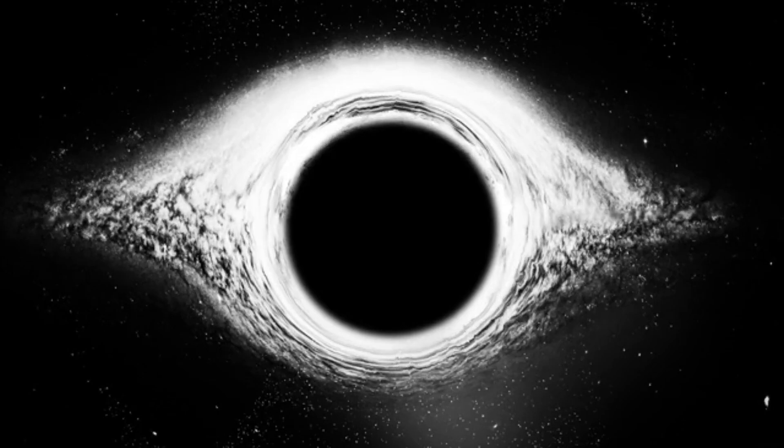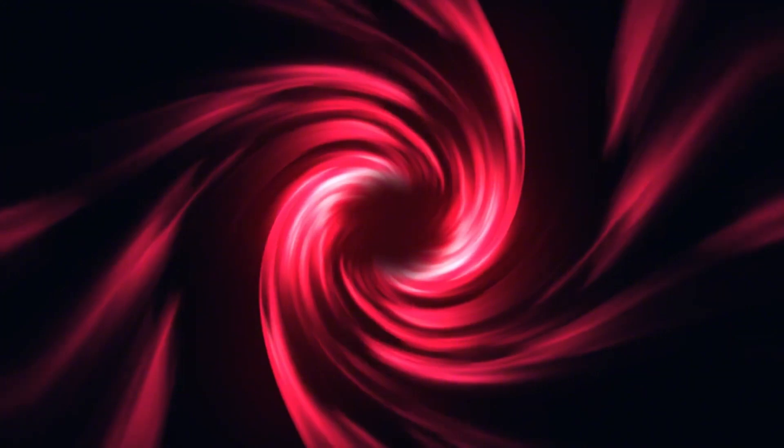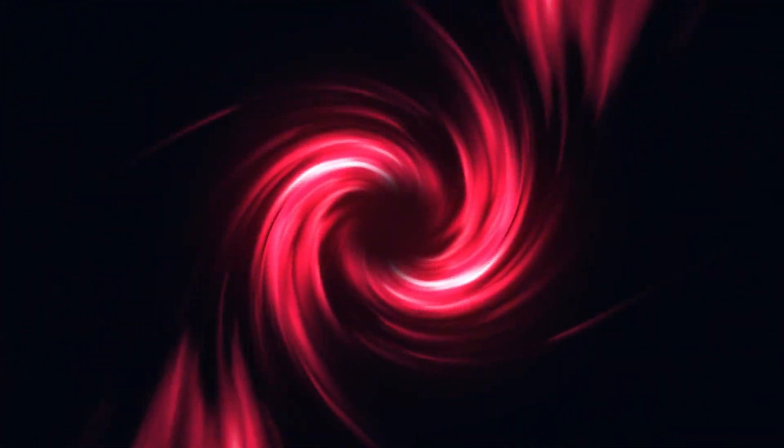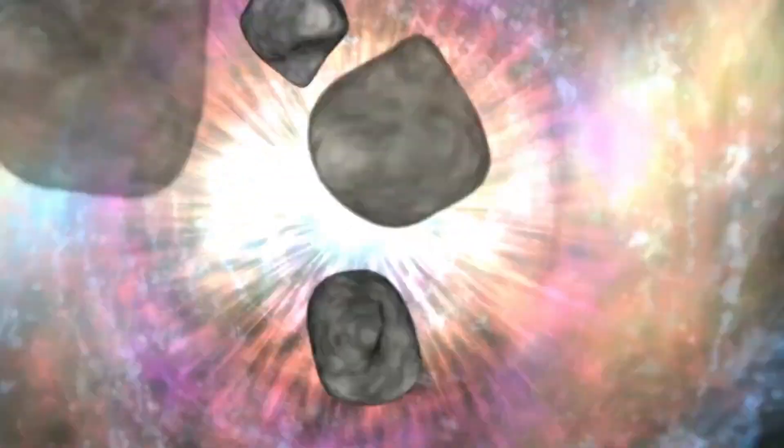To grasp the idea of a wormhole, it's important to understand the concept of space-time as described in Einstein's theory. Space-time is a four-dimensional fabric that is warped by objects with mass. This warping creates gravitational fields that influence the movement of other objects.